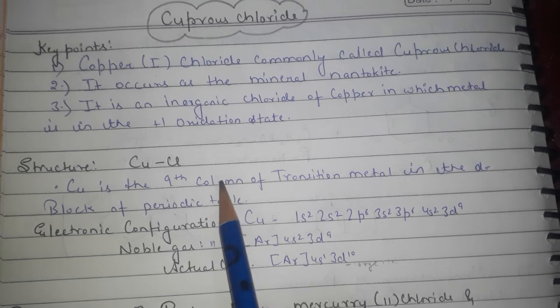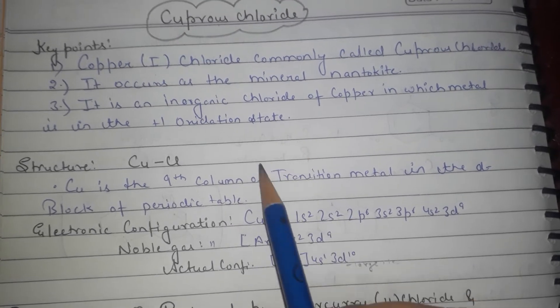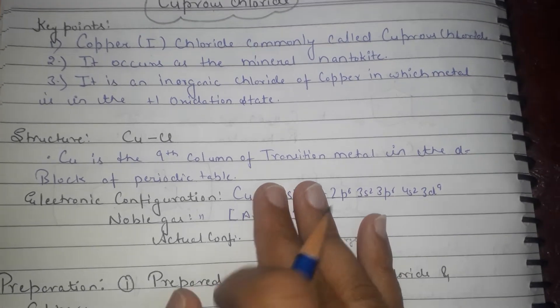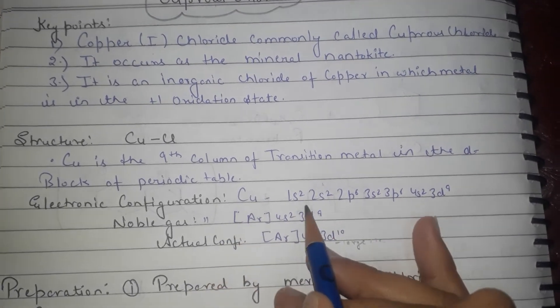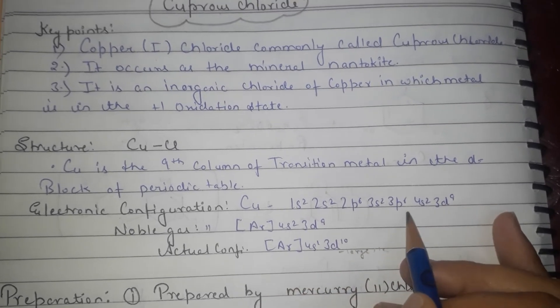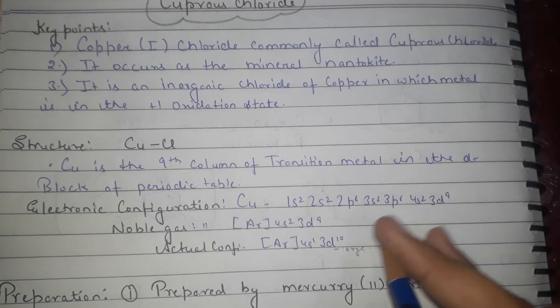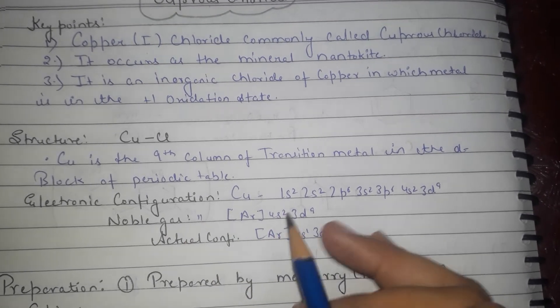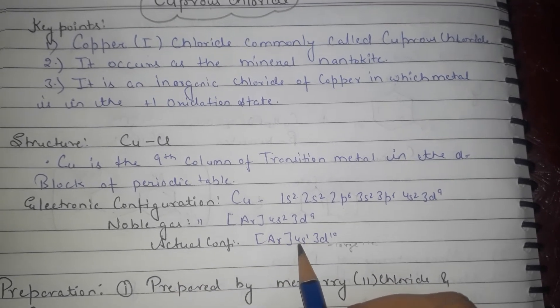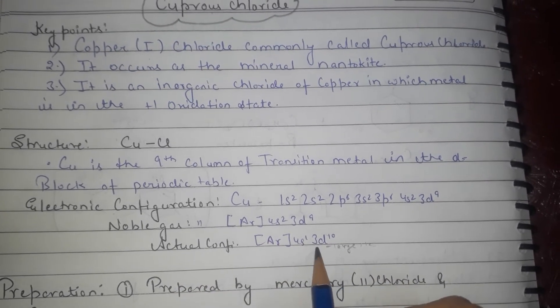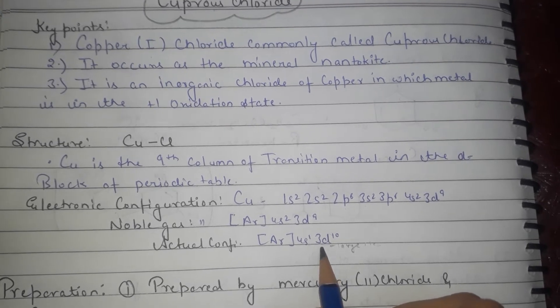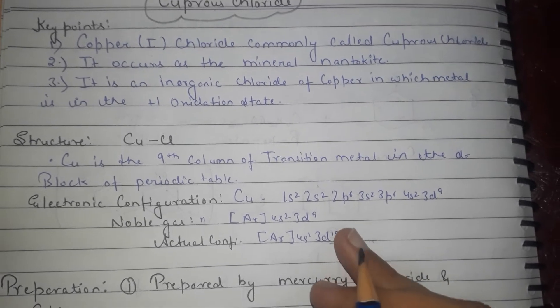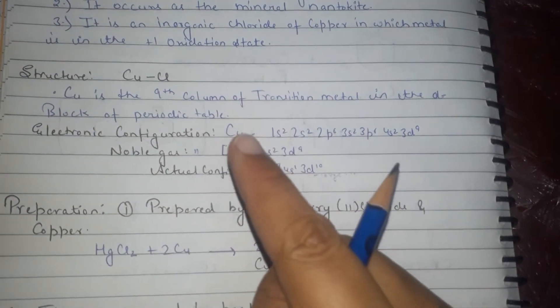Cu is the 9th position in transition metal in the d-block of periodic table. Electron configuration of copper is 1s2, 2s2, 2p6, 3s2, 3p6, 4s2, 3d9. As noble gas configuration with Ar: 4s2, 3d9. Actual configuration can be Ar 4s1, 3d10, just because 3d is large in size and it has complete d-orbital electrons.